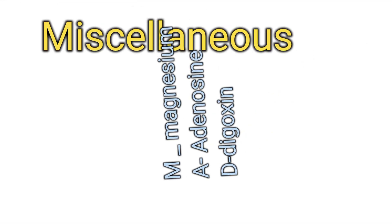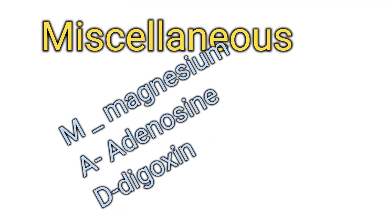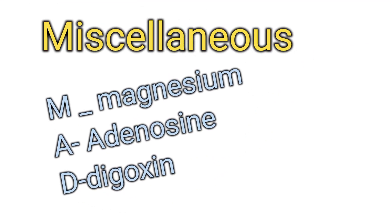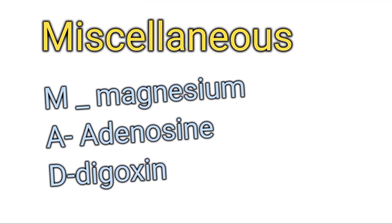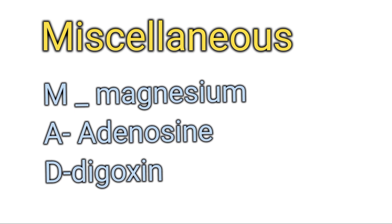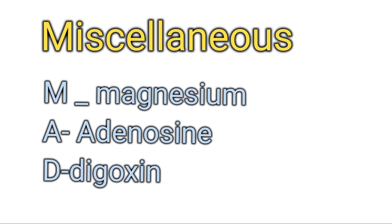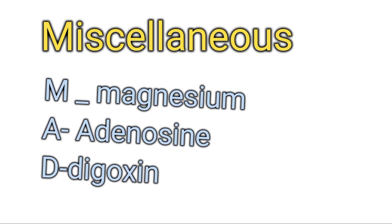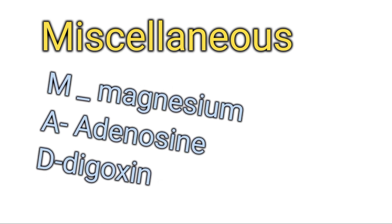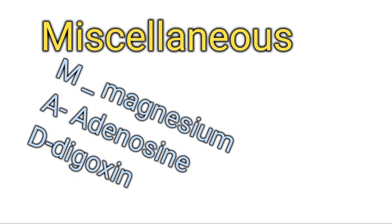In miscellaneous drugs we have the MAD group. A mad person does extra things, so MAD means: M for Magnesium, A for Adenosine, and D for Digoxin. So the MAD group of drugs are the miscellaneous group of anti-arrhythmic drugs.